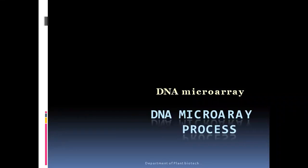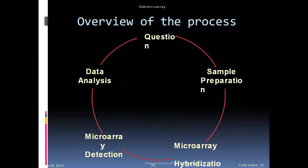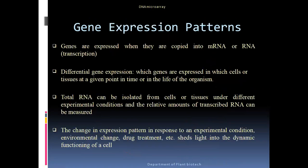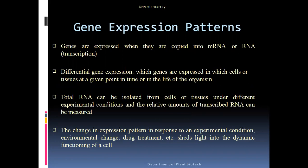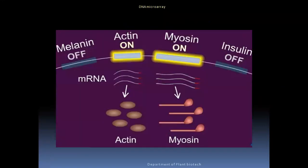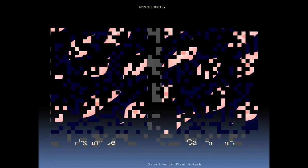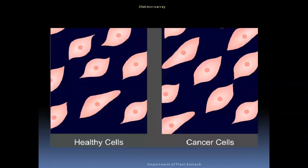Now we will study the detailed process of DNA microarray. The basic steps are: first, sample preparation; second, microarray hybridization; third, detection; and fourth, data analysis. We also know about gene expression patterns — through the central dogma, the gene expresses itself from transcription to translation. Examples include actin and myosin, where the mRNA of the gene gets expressed, and we compare healthy cells and cancer cells.